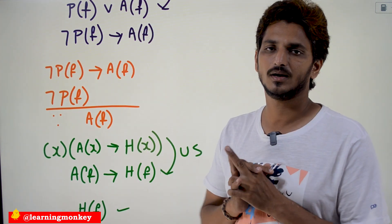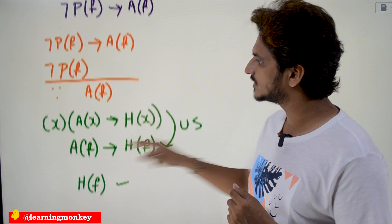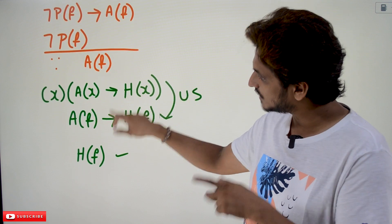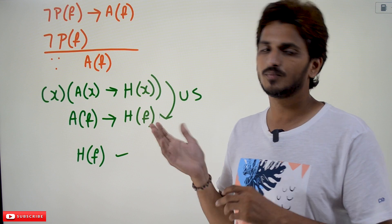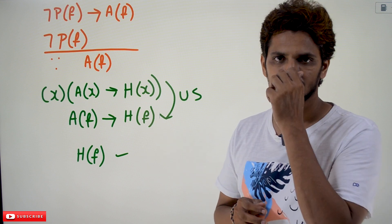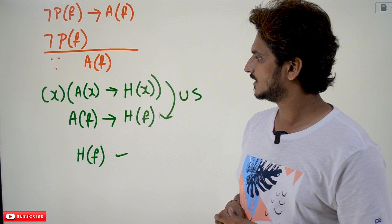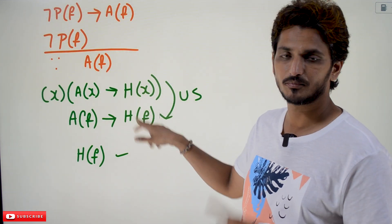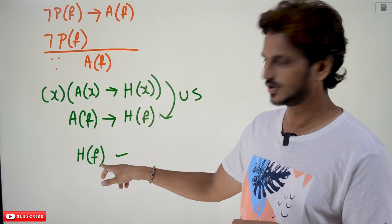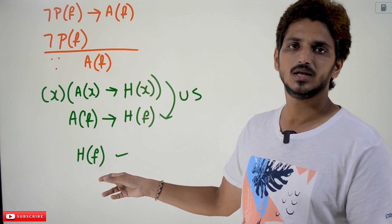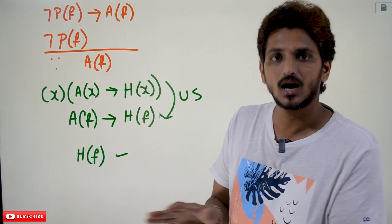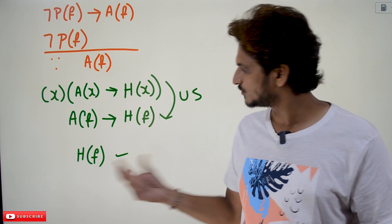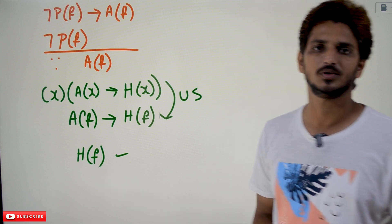Next, taking the third equation for all X, A(X) → H(X), by universal specification this becomes A(F) → H(F). We already derived A(F), so by modus ponens we conclude H(F) — meaning F has a heart. Joe's goldfish has a heart, which is exactly what we needed to conclude.